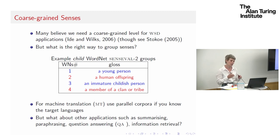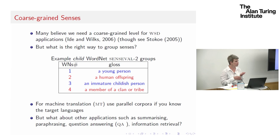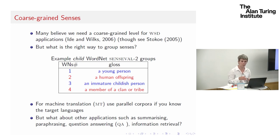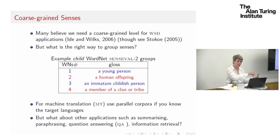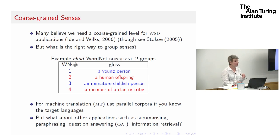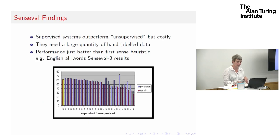For machine translation it makes sense to use parallel corpora and get sense distinctions from that parallel data, but what about other applications — summarisation, paraphrasing, monolingual question answering, or modelling what goes on within humans for word meaning? We clearly get puns and jokes and clearly manipulate ambiguity — I passed the coffee trolley getting the train to London and it's 'the daily grind,' meaning both grinding coffee and the daily grind of commuting. It's clearly something we all recognise and engage with.